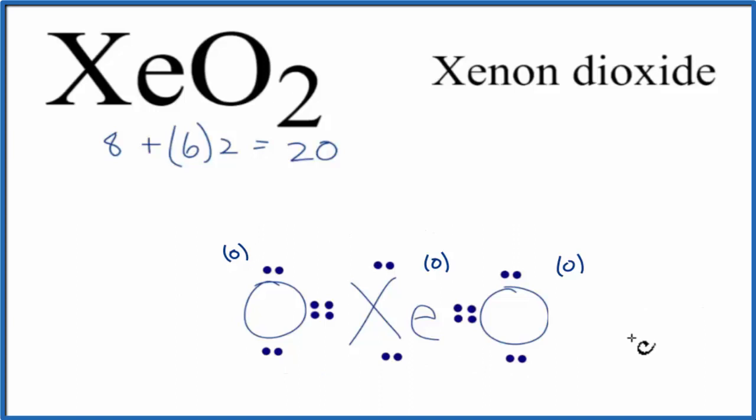this really is the best Lewis structure for Xenon dioxide, XeO2. You can see my video on formal charges in the description if you need some help calculating those. This is Dr. B with the Lewis structure for XeO2. Thanks for watching.